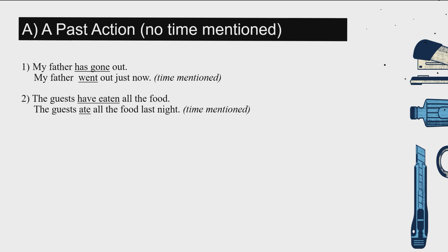If the time is mentioned — for example, 昨晚 (last night) — the time is mentioned, so you use past tense: 'The guests ate all the food last night.' You see the difference between present perfect and past tense. Present perfect: 没有讲时间 — has/have + past participle. Past tense: 讲有时间的 — because you're talking about last night.